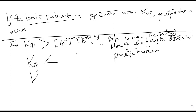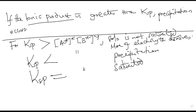If Ksp is equal to the ionic product, then the solution is saturated and no more of the sparingly soluble electrolyte will dissolve. These principles can be applied in analytical questions, and I'm going to do one or two analytical questions to show you how.